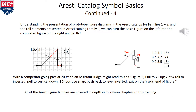Now that we know how to read Aresti catalog families 1 through 8 figures, we can take the family 1 figure on the left, add to it the family 9 rolls of our choice, and form the figure shown on the right. At a contest, if you sat behind a judging team and a competitor were flying this figure, you might hear the assistant judge read off: figure 5, pull to 45 up, 2 of 4 roll to the inverted, pull to vertical down, 1 and a quarter positive snap, push back to level inverted, exit on the y-axis, end of figure.